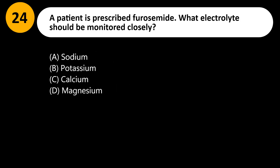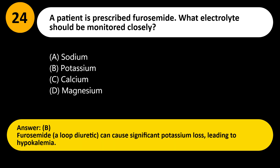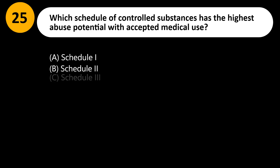A patient is prescribed furosemide. Which electrolyte should be monitored closely? A) Sodium, B) Potassium, C) Calcium, D) Magnesium. Answer: B. Furosemide, a loop diuretic, can cause significant potassium loss leading to hypokalemia.